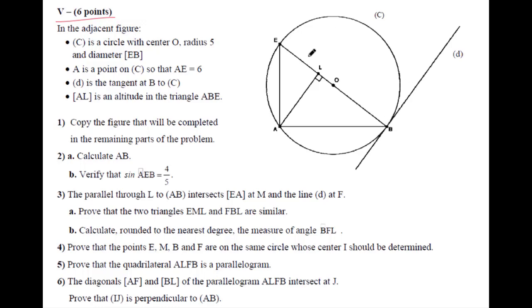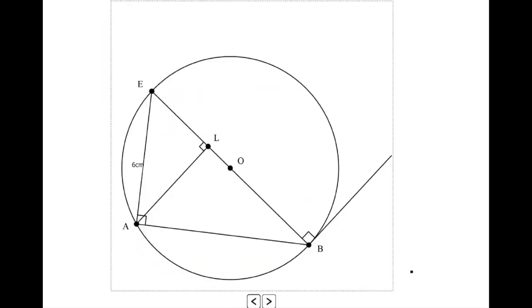AL is an altitude in the triangle ABE. I will copy the figure that will be complete in the remaining part of the problem. D is the tangent at C at point B, and EB is the diameter. AE equals 6 cm.